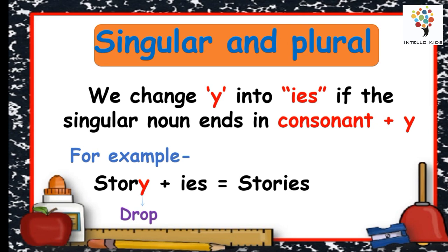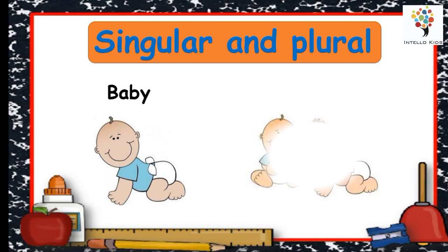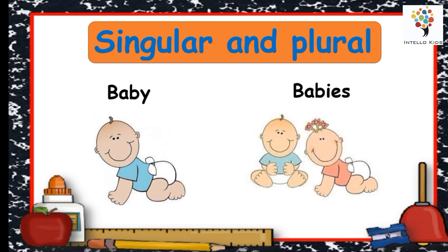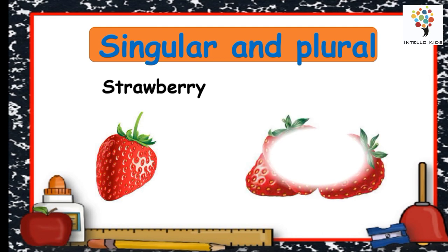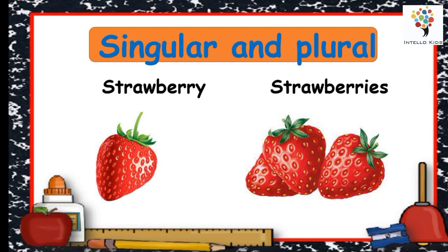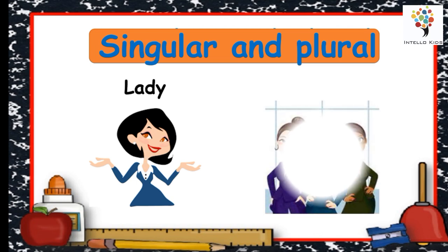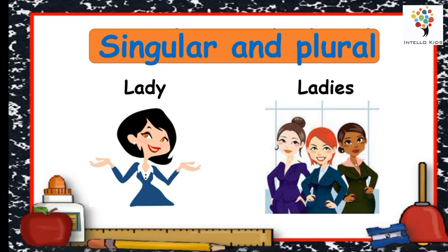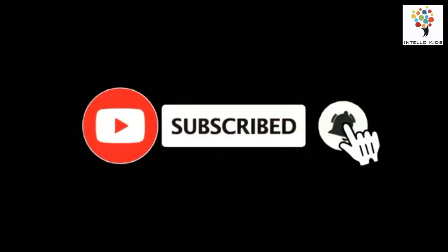We change Y into IES if the singular noun ends in consonant plus Y. Story, stories. Baby, babies. Strawberry, strawberries. Lady, ladies.